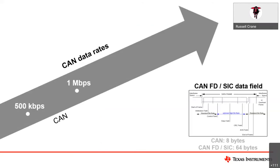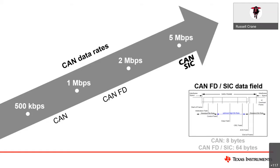If you look at where CAN has come from, we started out at 500 kilobits per second. With CAN FD, that moved up to 1 megabit, 2 megabits, and even 5 megabits per second. CAN SIC addresses the 5 megabit range. It can be used across all data rates, but it's most useful at the higher data rates or when you have a very complicated topology.